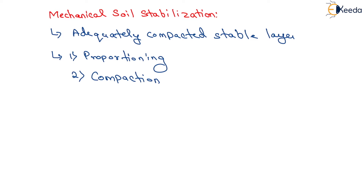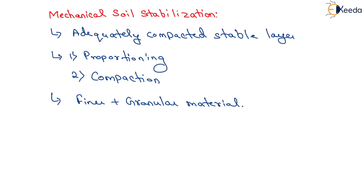Similarly, the stability of fine-grained soil could be considerably improved by mixing a suitable proportion of granular material to get a suitable gradation. Whenever we mix finer particles and granular material, we will get a complete mixture of proper gradation, and the stability of that mixture will be very high. So if we want to increase the bearing capacity of the soil, with granular soil we have to mix a certain amount of fine materials, or with fine particles we have to mix a certain amount of granular material to get a suitable gradation. The principle of mechanical soil stabilization has been successfully applied in the construction of sub-base and base courses of low volume roads.